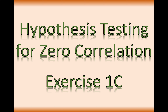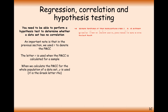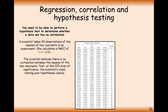We have a big chart to tell us what the PMCC needs to be for us to say yes there is correlation or no there is no correlation. Using that PMCC value we calculated before, you can see down the right-hand side the amounts of data values we have, and across the top the different significance levels.